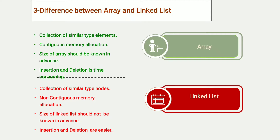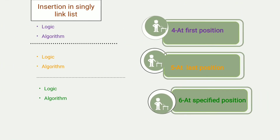Array is the collection of similar type elements, while linked list is the collection of similar type nodes. In array there is contiguous memory allocation, while in linked list there is non-contiguous memory allocation. In array the size should be known in advance, but in linked list it need not be known in advance. Insertion and deletion are time-consuming in array, while they are easier in linked list.